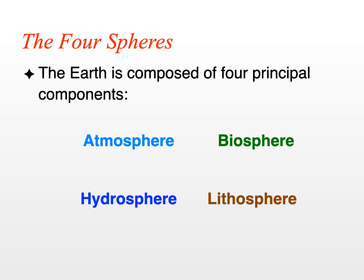We can suggest that the Earth is composed of four principal components, or spheres: the atmosphere, the biosphere, the hydrosphere, and the lithosphere. Geography 108 is going to focus on the first two — the atmosphere and the biosphere.